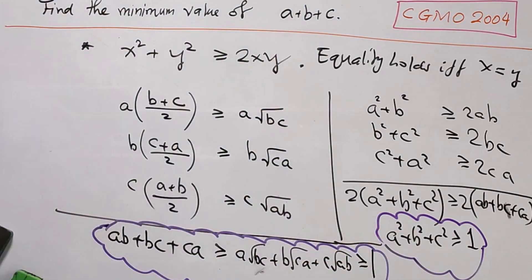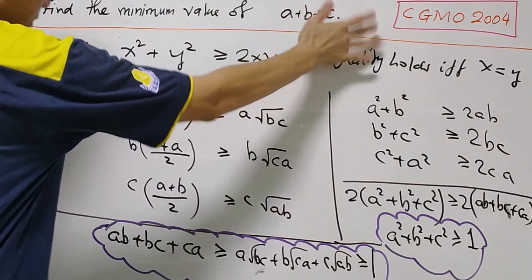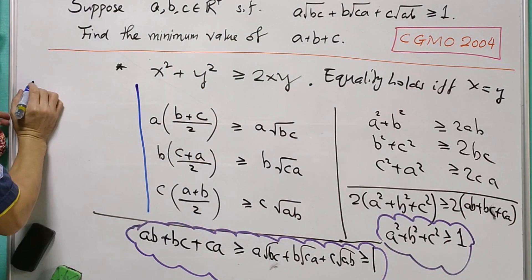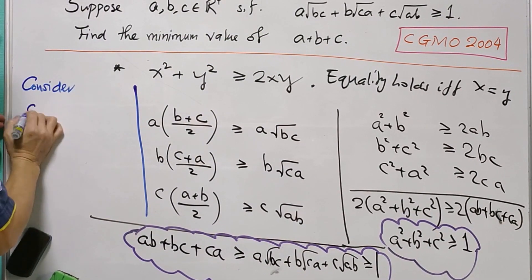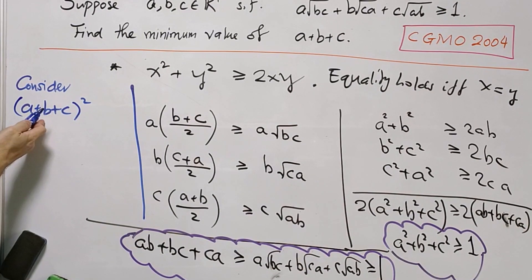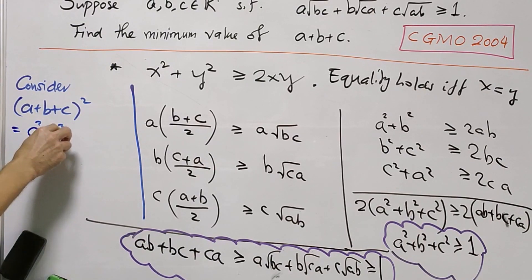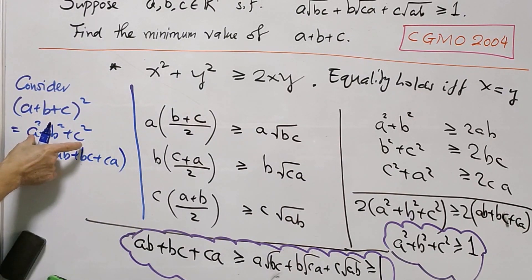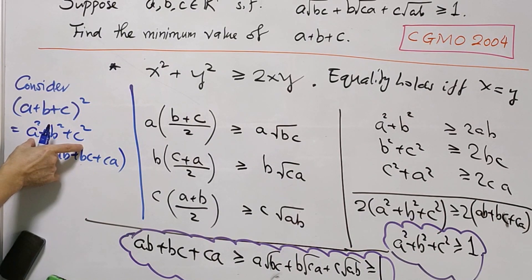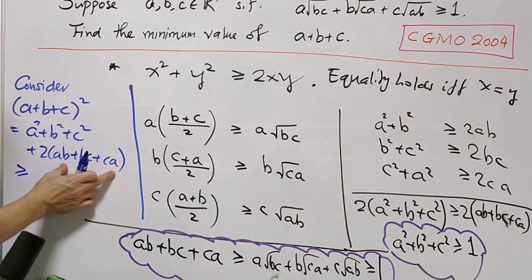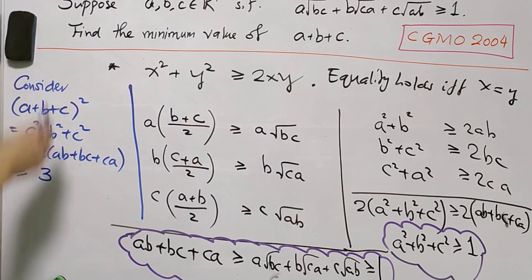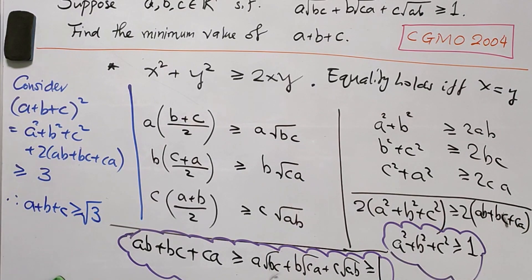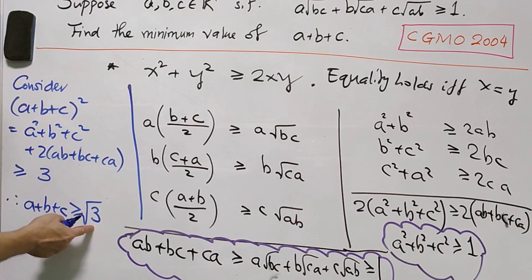Now we have these two important results to help us find the minimum value of A plus B plus C. We consider (A plus B plus C) squared. After expanding, this equals A squared plus B squared plus C squared plus 2(AB plus BC plus CA). Since A² + B² + C² is greater than or equal to 1 and AB + BC + CA is also greater than or equal to 1, the whole expression is greater than or equal to 3. Therefore, A plus B plus C must be greater than or equal to √3. We need to show that this value √3 is achievable.